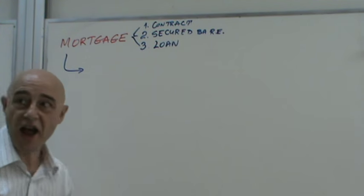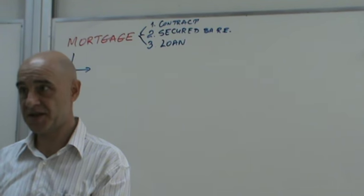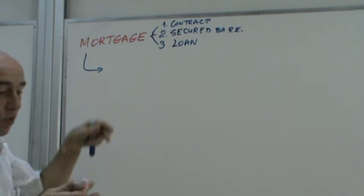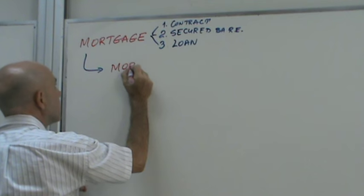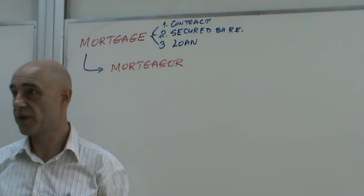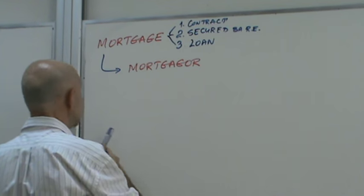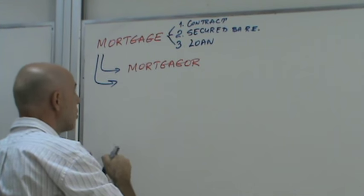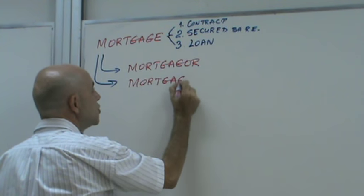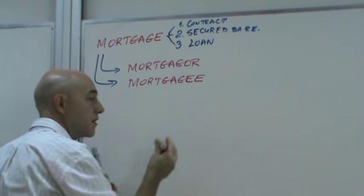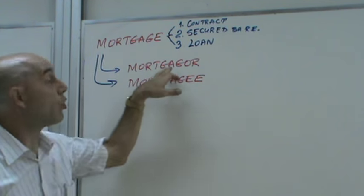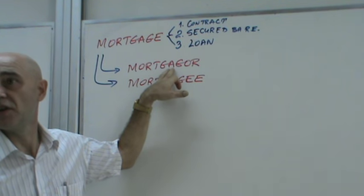The person who makes the loan is called the lender. The lender of a mortgage is called the mortgagor. The borrower is called the mortgagee. So mortgagee is the borrower and mortgagor is the lender.